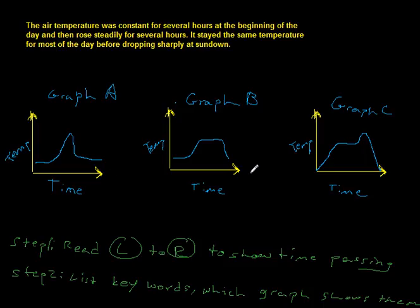Well, we can already cross out, and make sure that my colors are nice and fresh and new here. We can already cross out graph C. Graph C is not going to work because it does not start out constant. It starts out rising rapidly. Only two graphs that start out constant are graph A and graph B.